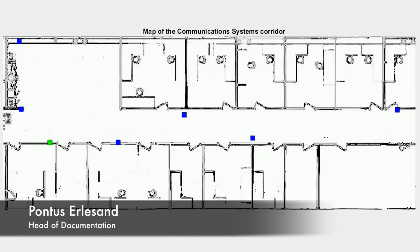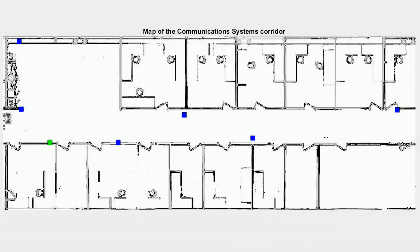Here is our GUI. On the map you can see the blue squares that represent the anchor positions. The green square represents the origin with respect to the anchor positions. And the red circle represents our estimated tag position.